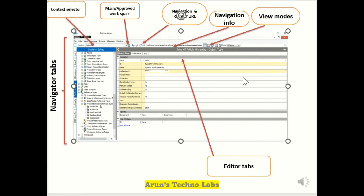The ID is unique and it is an immutable ID — even the name can be changed, but the ID cannot be changed. When we search by ID, we can get all the attributes based on that ID. Here are the editor tabs.